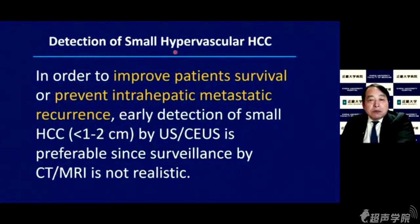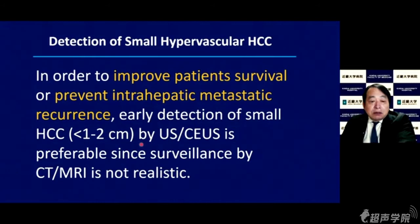Detection of small hypervascular HCC is very important in order to improve patient survival and prevent intrahepatic metastasis recurrence. Early detection of small HCC less than 1 to 2 centimeters by CEUS is preferable, since surveillance by CT or MRI is not realistic. Small hypervascular HCC measuring 1 centimeter in diameter has very rare microsatellite regions and microscopic vascular invasion.